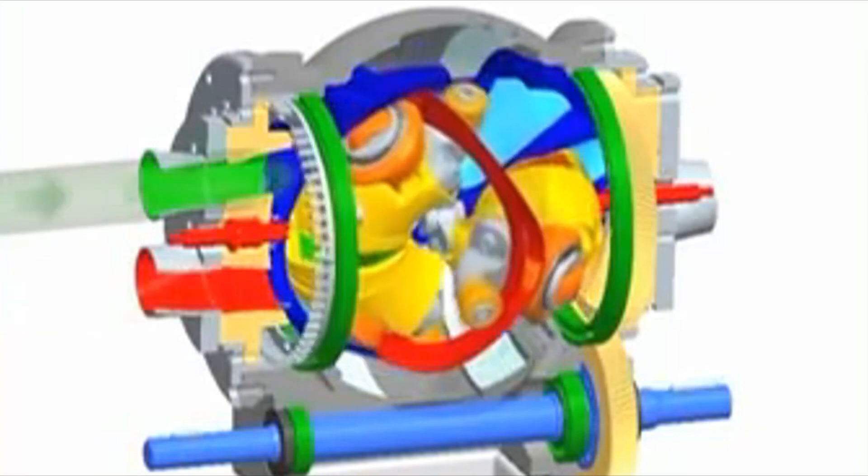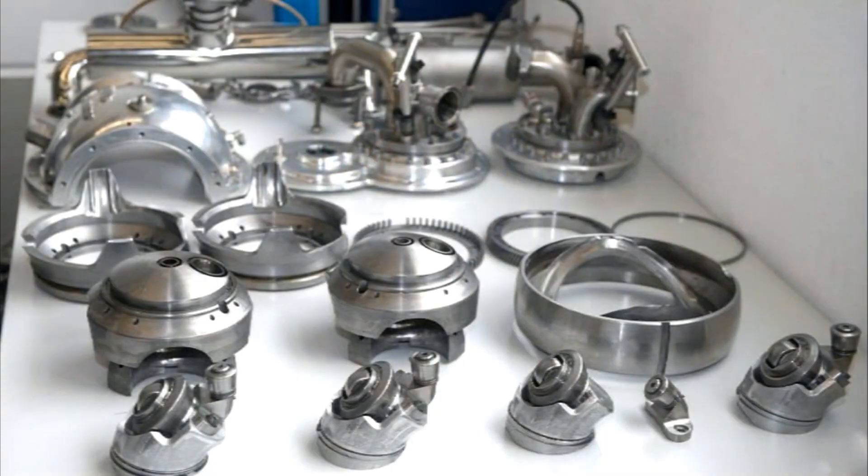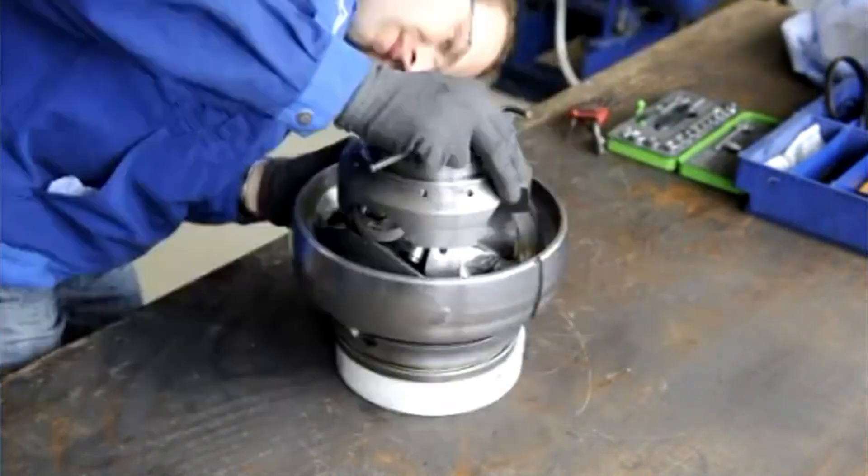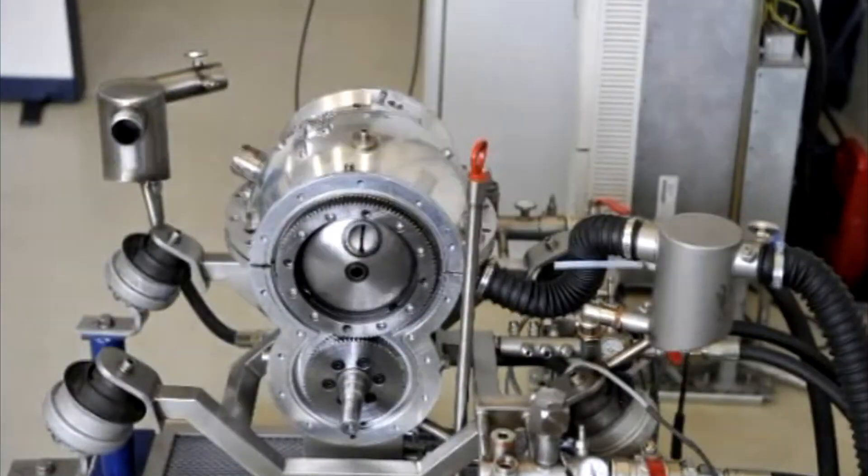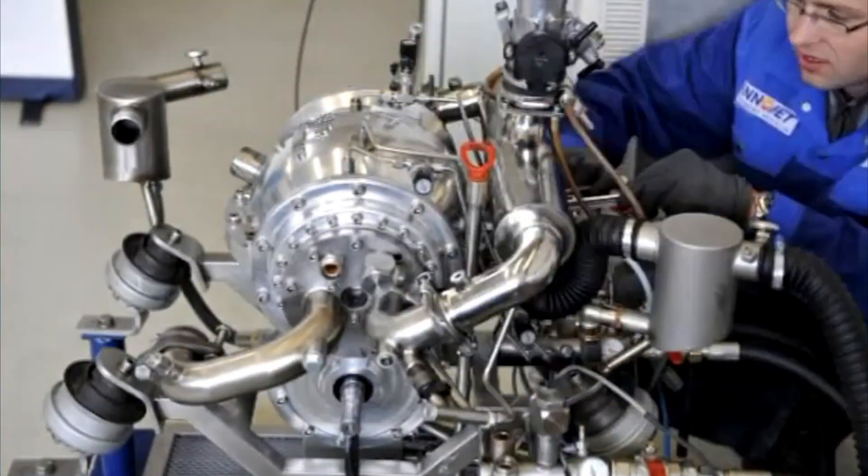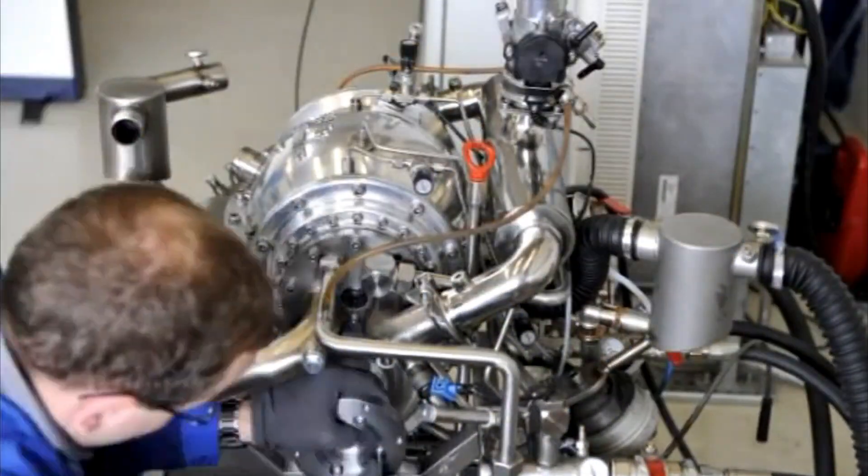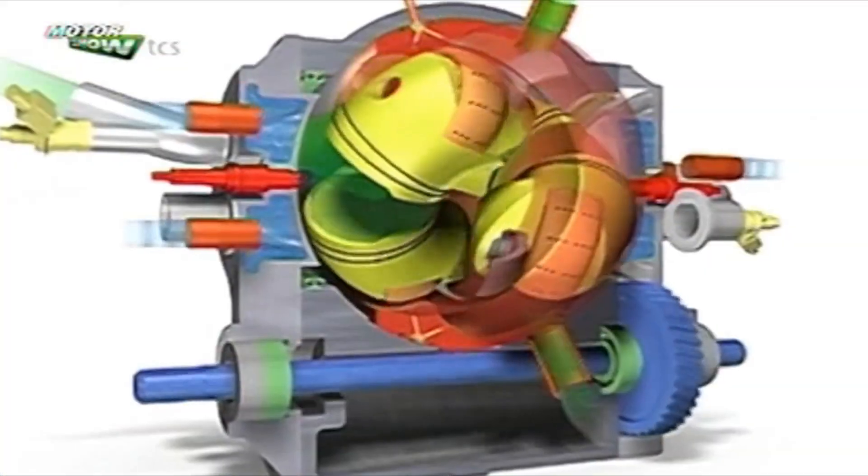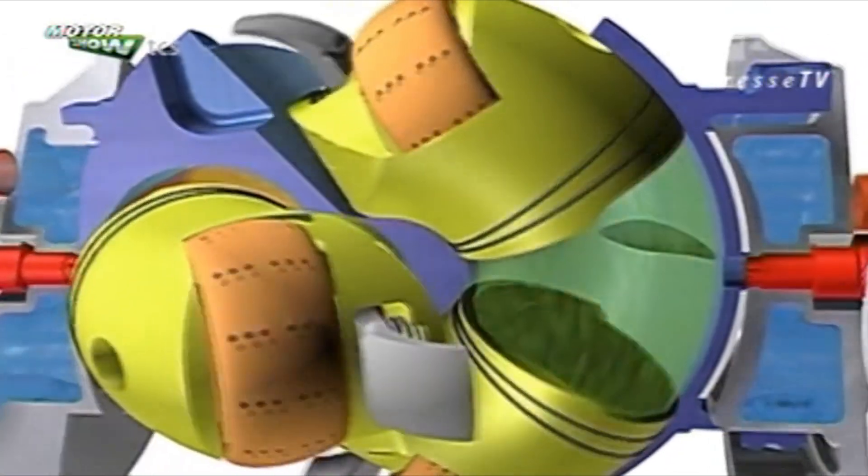One significant advantage of their solution is that the entire structure contains three times fewer components - there are only 62 parts in total. The engine weighs 62 kilograms and with a displacement of 1.2 liters it delivers an impressive 100 horsepower. While there are other developments of spherical engines, none of them have entered mass production at the moment.